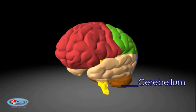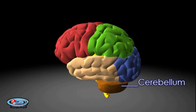The cerebellum is a region of the brain that plays an important role in motor control. It may also be involved in some cognitive functions such as attention and language, and in regulating fear and pleasure responses.